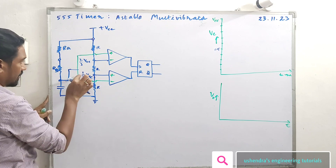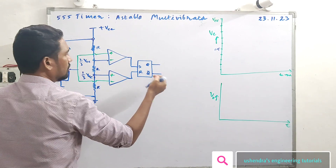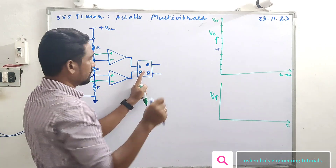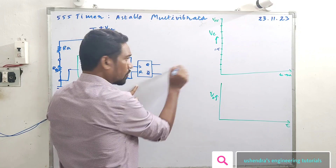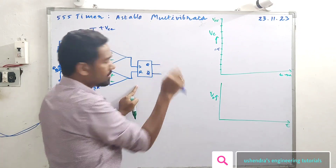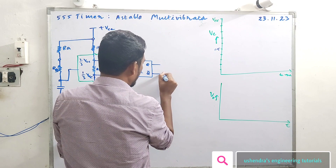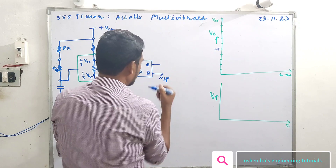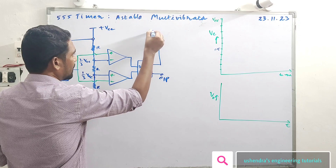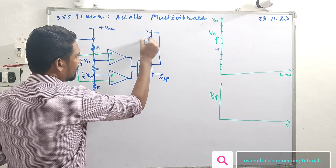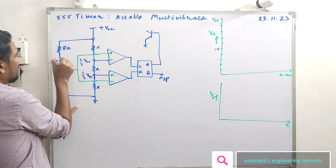You can get the inverting output. This is Q-bar — this is the right output. Then Q — this is the transistor. A transistor, which is grounded. It is like R-A, R-B — it is the center point connected to the transistor discharge terminal.